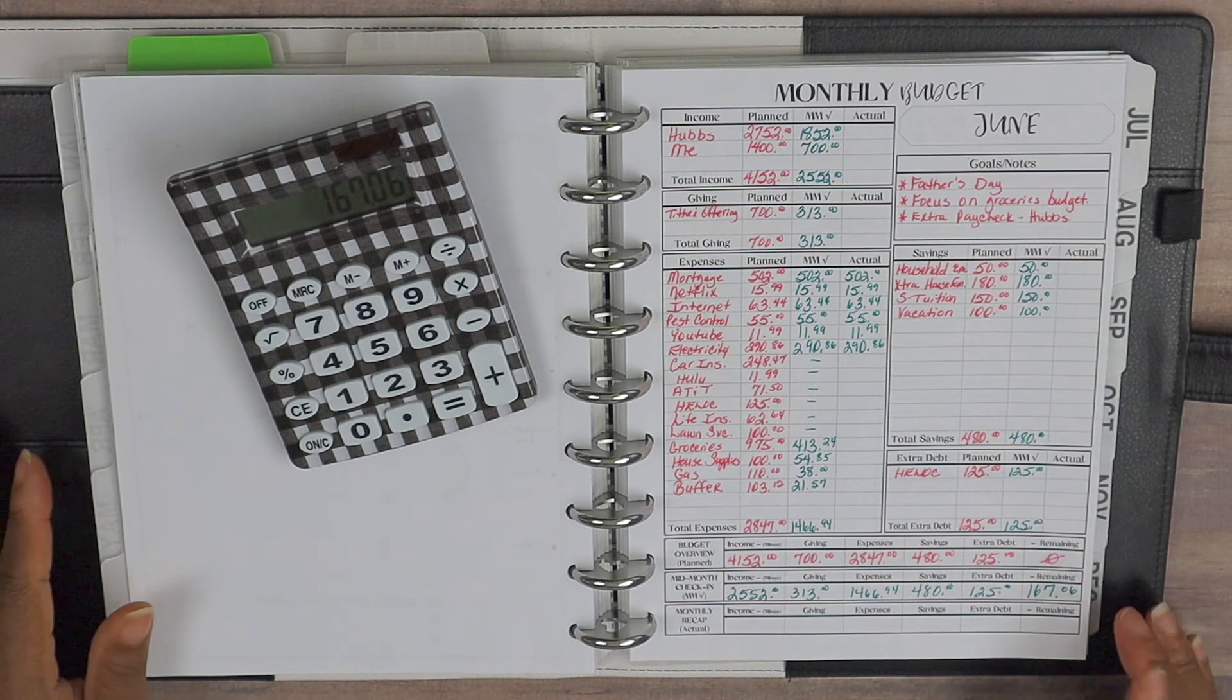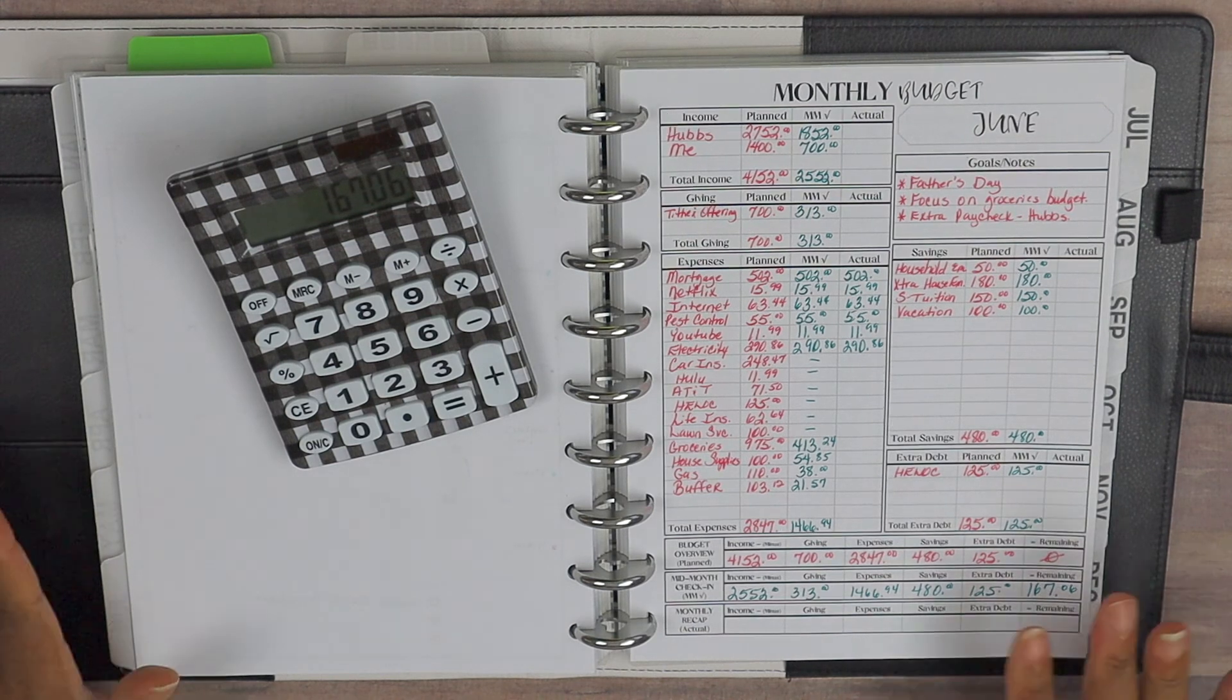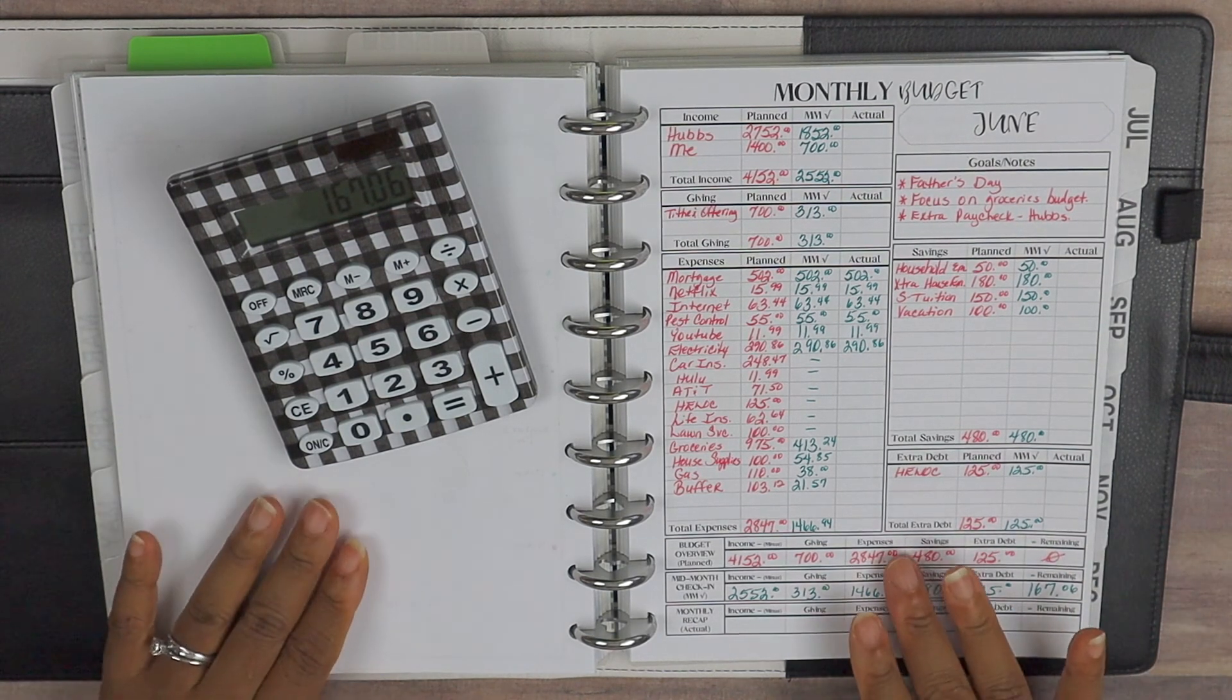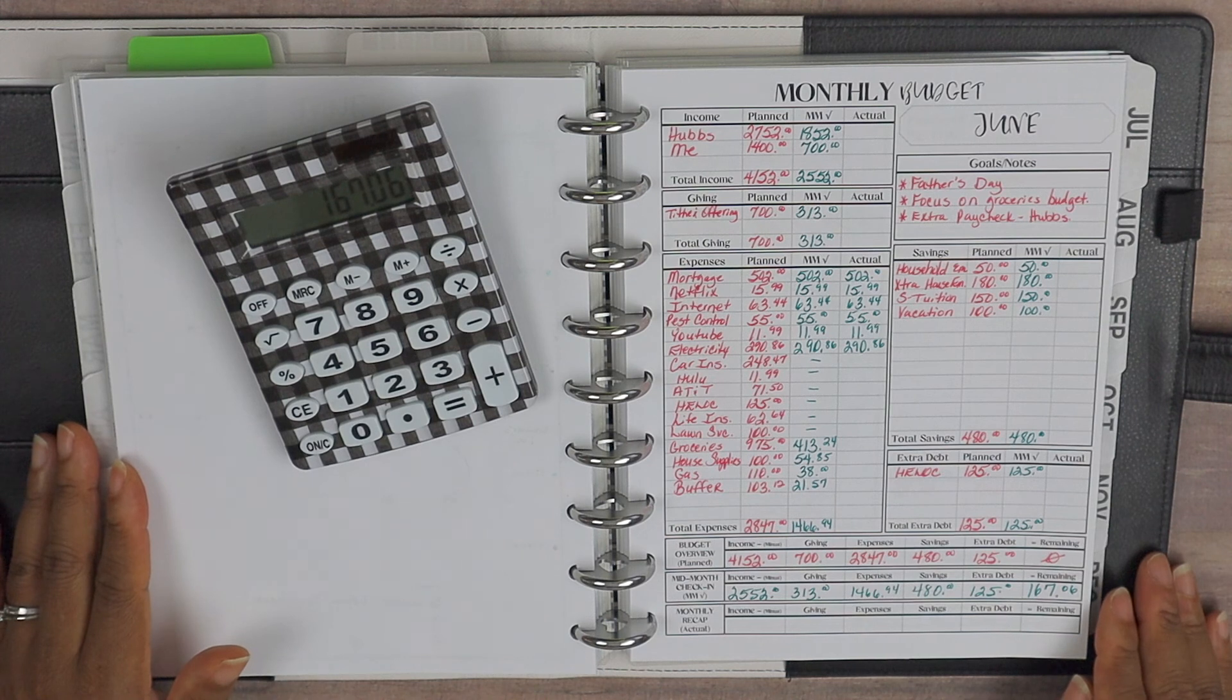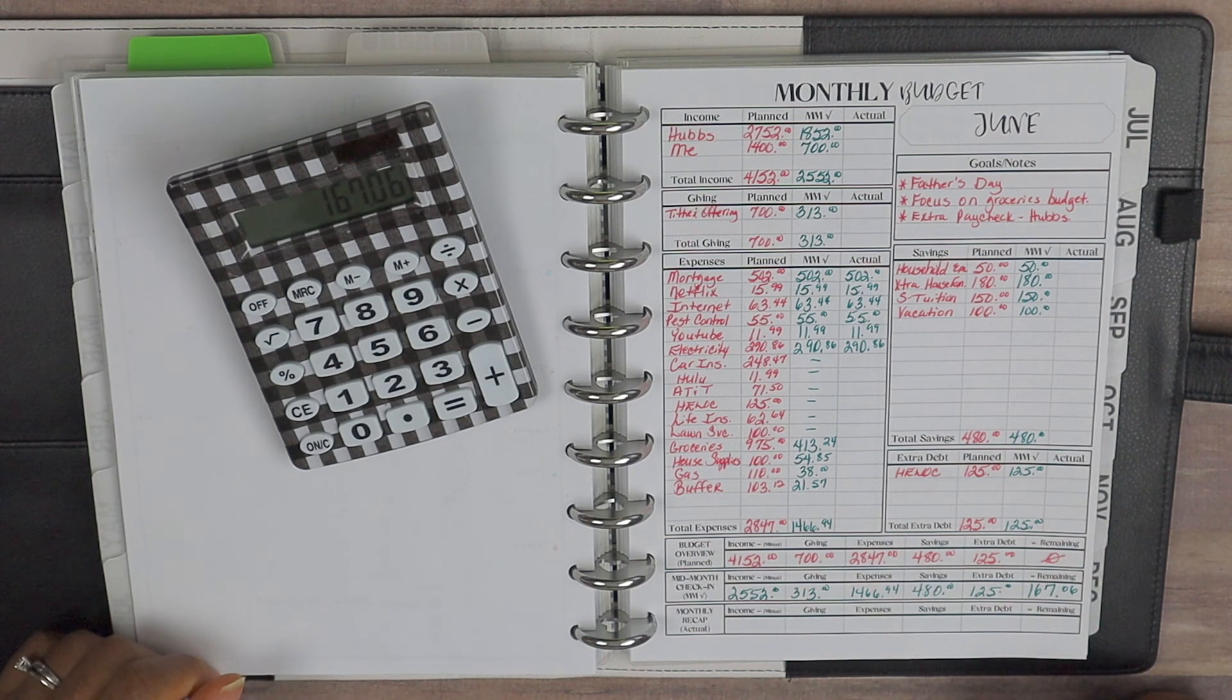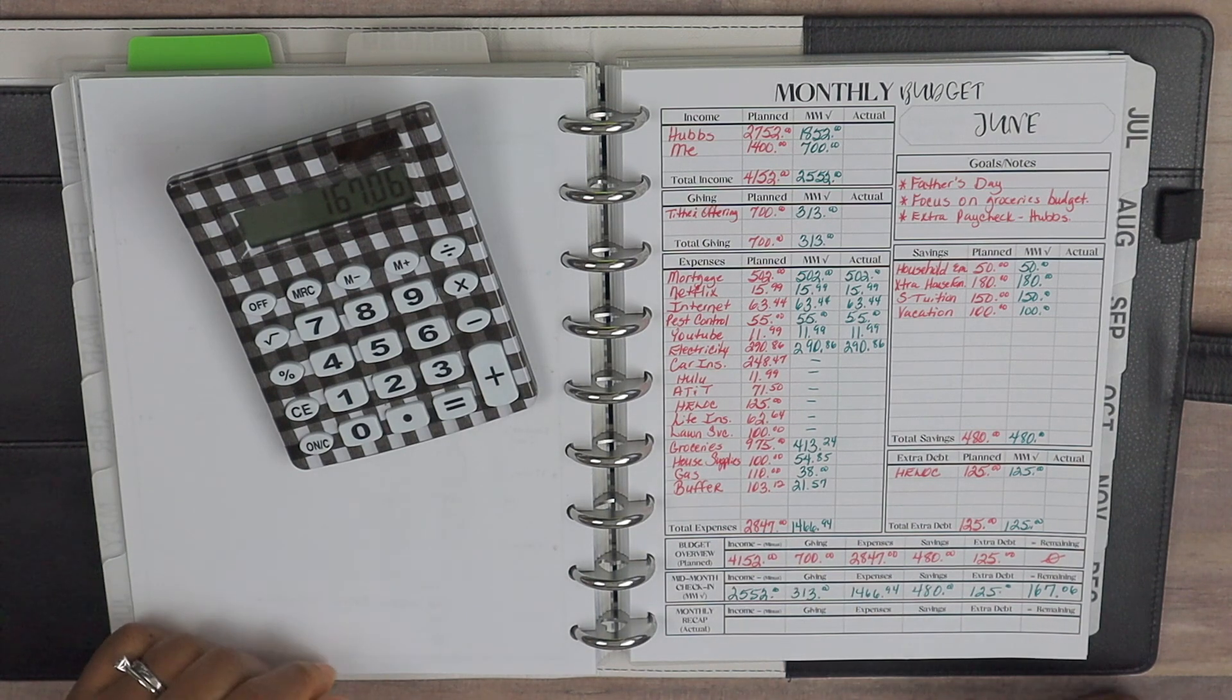All right guys, so this is our mid-month check-in. Leave me a comment down below—how is your June budget going thus far? All right guys, you already know the deal. I'll see you later. Bye!